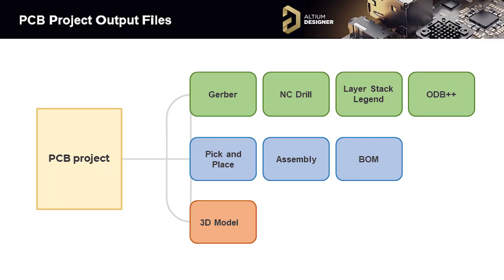PCB project output files are divided into three main file packages. The first group are data sets for PCB manufacturing — this includes Gerber, NC drill files, ODB++, and data about the PCB structure such as the layer stack-up, impedance profiles, and layer materials. The second group are files for device assembly: pick-and-place files, assembly drawings, and the bill of materials.